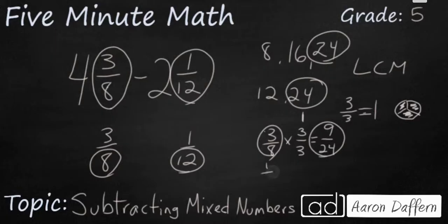I'm going to do the same thing for my 1 twelfth. 1 twelfth times something is going to make 24. So 12 times 2 is going to make 24. So if I put a 2 up on top there, then I'm going to multiply it by 1 because 2 halves makes 1. And 1 times 2 is 2.